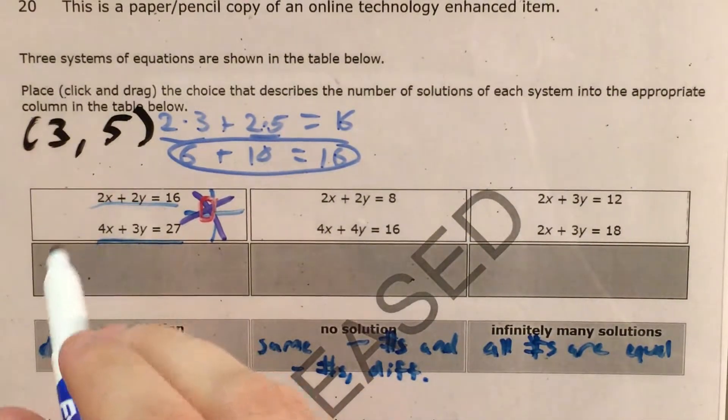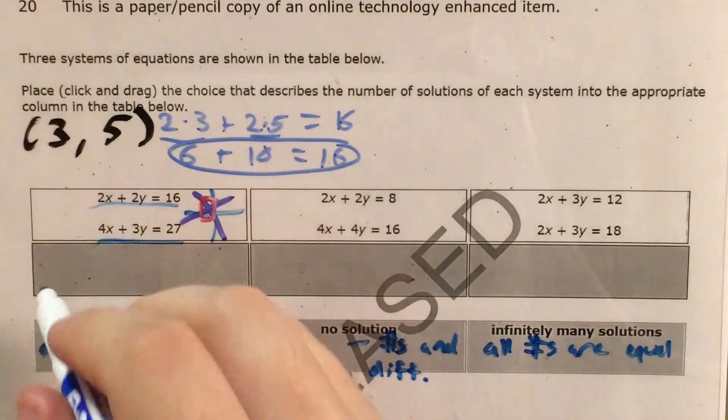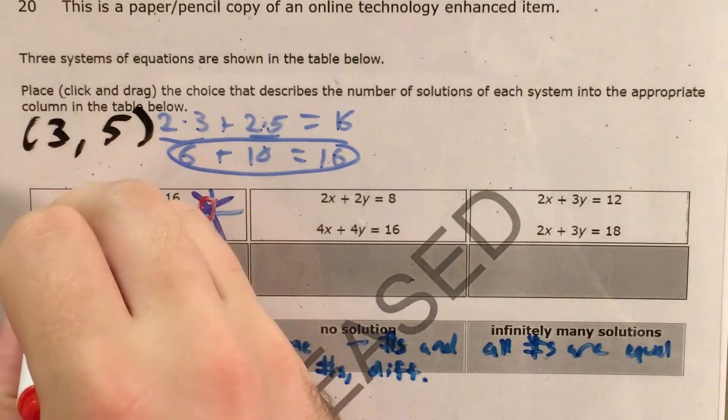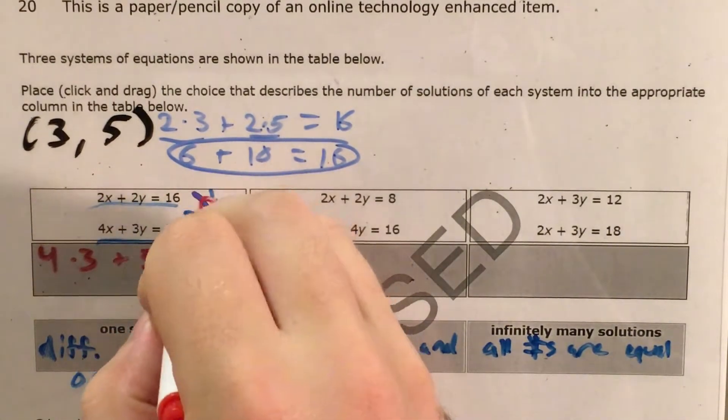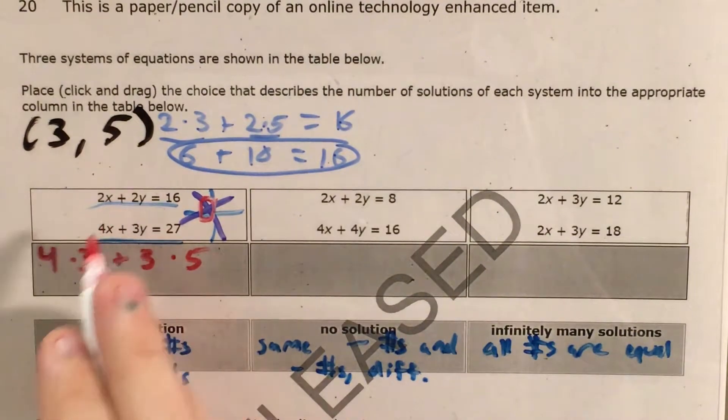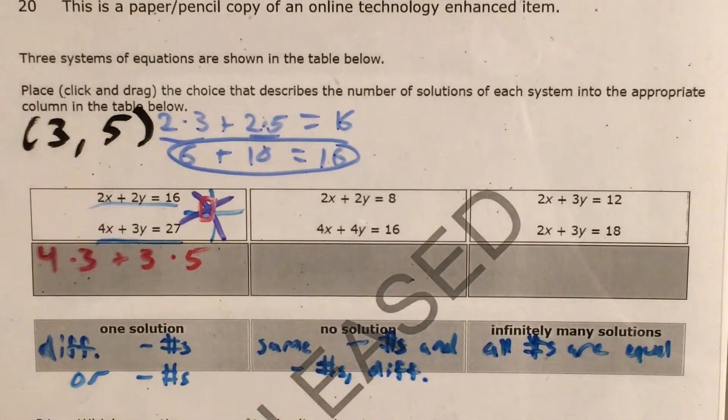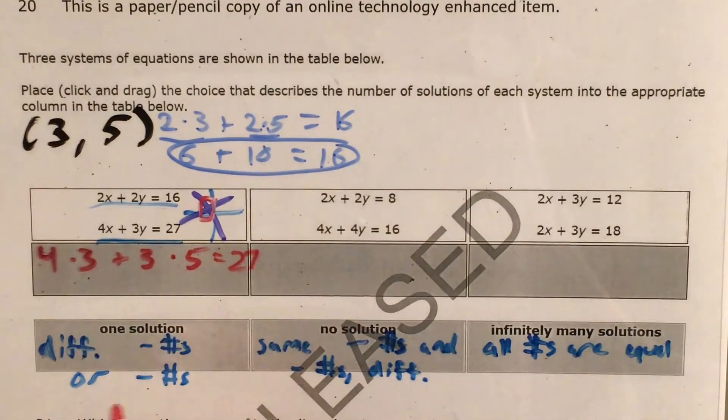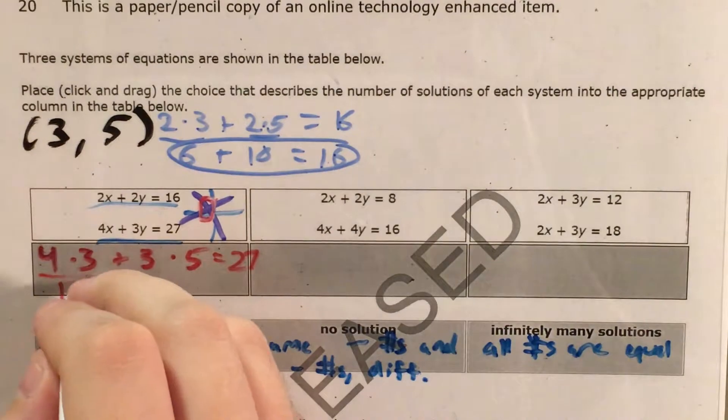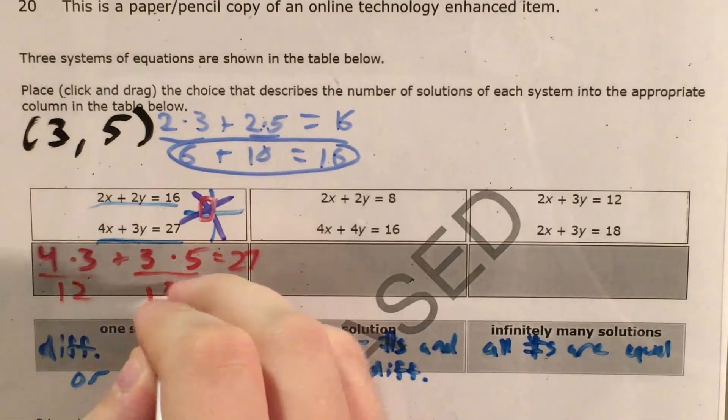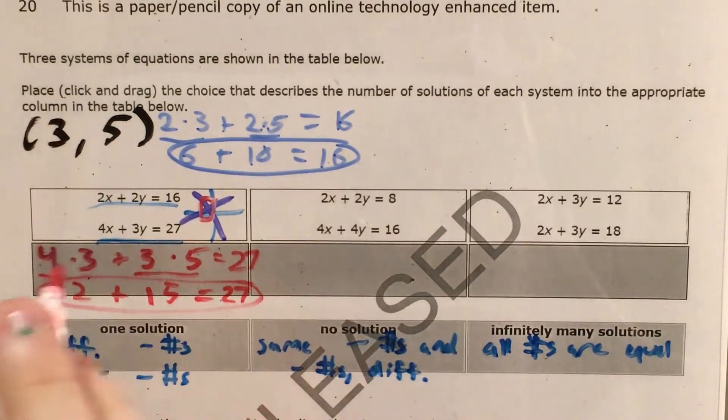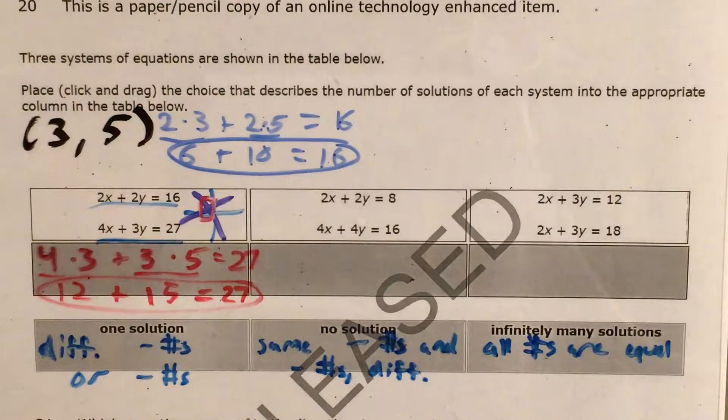And now for the other equation, 4x plus 3y equals 27. I'll get a darker marker for that and do it down here. This would end up being 4 times 3 instead of 4 times x, and 3 times 5 instead of 3 times y. And I'm going to see if that equals 27. 4 times 3 is 12. 3 times 5 is 15. It is true that 12 plus 15 equals 27. So that was just a quick excuse to demonstrate exactly how a solution to a system of equations works.